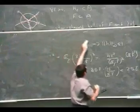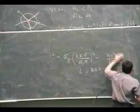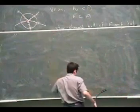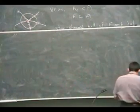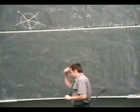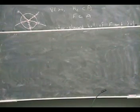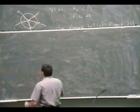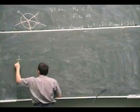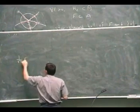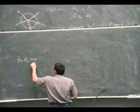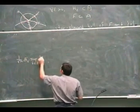To get to the Rademacher complexities, all you do is take the expectation with respect to the random variables. But if you fix a sample, you can look at it as some sort of a projection — a random projection onto an n-dimensional space. It takes your class, which is a class of functions, into a set of vectors f(x_1), ..., f(x_n), where f is in F.